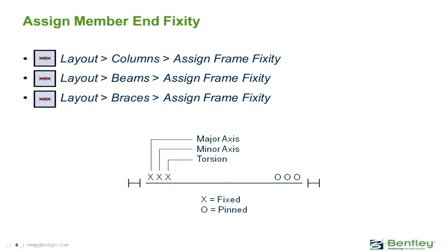The first property we're going to discuss is member end fixity. Frame fixity can be assigned to lateral beams, columns, and braces in the RAM Modeler. This will allow you to fix or pin the major axis, the minor axis, and the torsional fixity for each end of each type of lateral member.